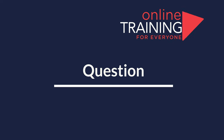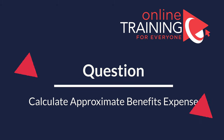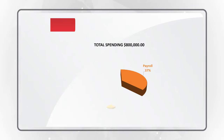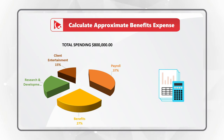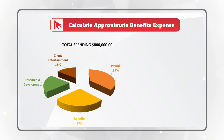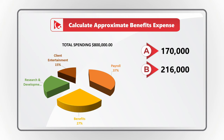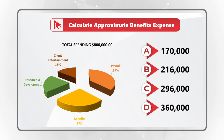Here is an amazing question with an unusual twist which tests your knowledge of pie charts. You're presented with total spending for an organization and you need to calculate the approximate benefits expense. In addition to benefits expense you see payroll expense, research and development expense, and client entertainment. Your choices are: A) $170,000, B) $216,000, C) $296,000, and D) $360,000.